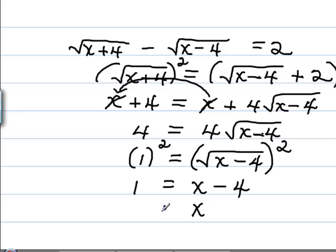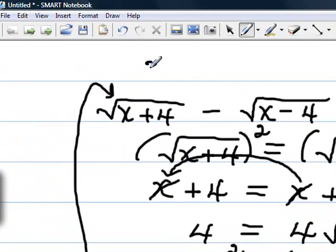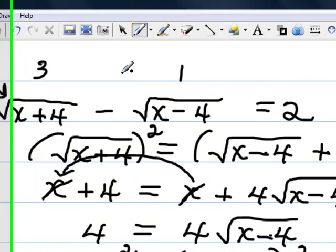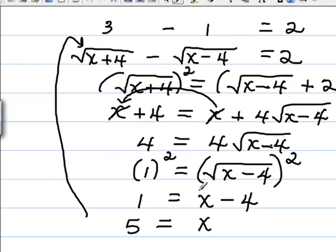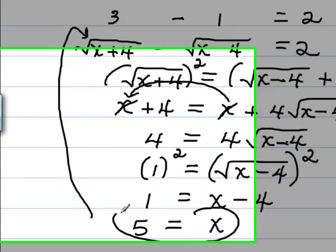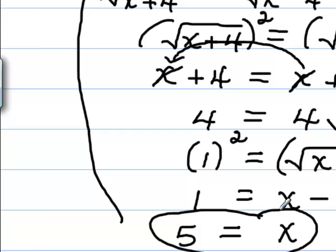So we end up with x equals 5. Now we want to make sure that we check that. We go up here and put 5 - when we get 5 plus 4 is 9 and the square root of 9 is 3. We put 5 here - 5 minus 4 is 1 and the square root of 1 is 1. 3 minus 1 is indeed 2. So the problem checks out and our solution is x equals 5.